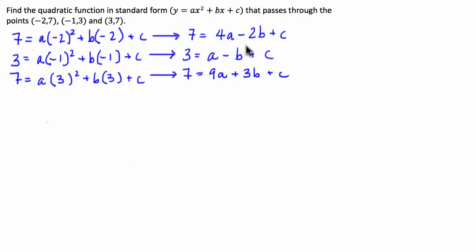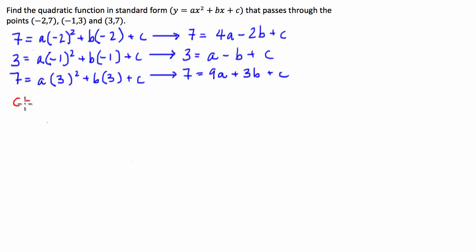The first thing we're going to do when solving simultaneously using the substitution method is isolate one of the variables on one side of the equality. Starting with equation 1, I'm going to isolate c on the right-hand side. Moving the 4a and 2b to the left, I get c = 7 - 4a + 2b.